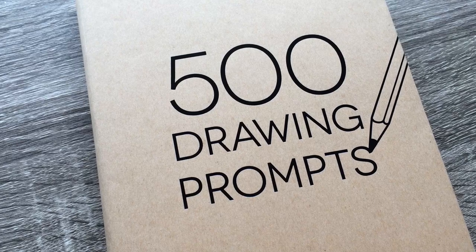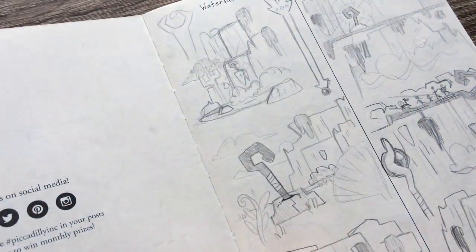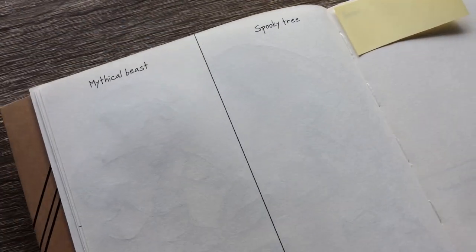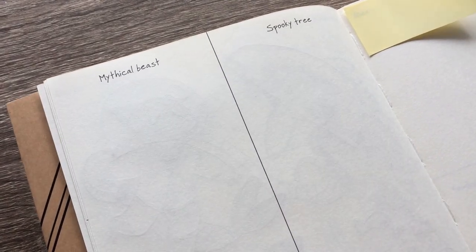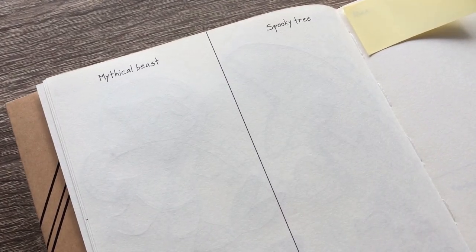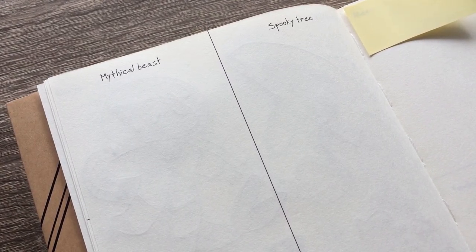Another prompt. Okay, let's do it. Mythical beast and — ooh, the spooky tree. Ooh, what a spooky tree. Are we gonna get a magical happy tree later? Alright, let's just get into it.